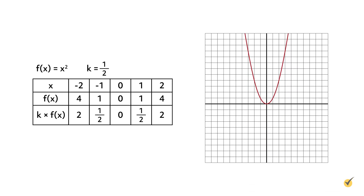If the value of the constant k is greater than 0 but less than 1, then the graph is compressed vertically. Let's compress the function f(x) equals x squared vertically by using one half for the constant k. The original function is shown on the graph in red. When the function is multiplied by one half, the graph is compressed vertically, shown on the coordinate plane in green. Multiplying the y-coordinates by a value greater than 0 but less than 1 compresses the graph vertically in relation to the original function.